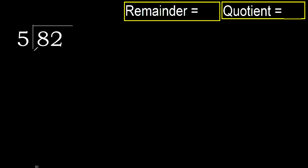82 divided by 5. 8 is not less, therefore we work with 8. Multiply 5 by which number is nearest to 8 but not greater. 5 multiplied by 2 is 10 — 10 is greater than 8. 5 multiplied by 1 is 5, which is not greater.